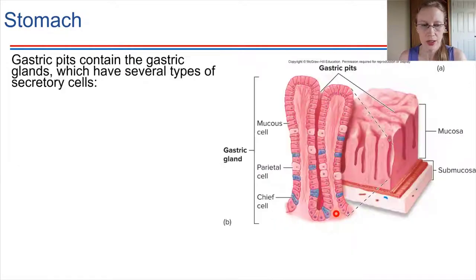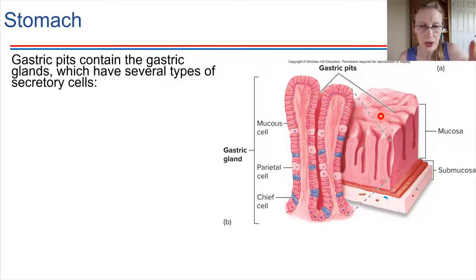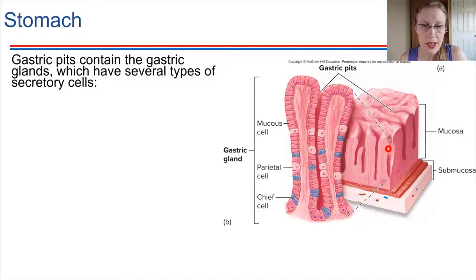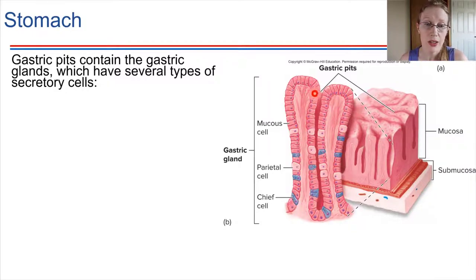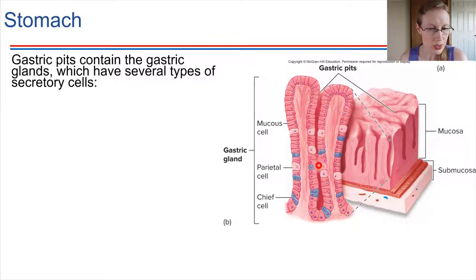Looking at the gastric pits: this is the inside surface of the stomach, and we can see all the rugae. If we follow one of those folds down, there's a big pit, and we zoom in on one of those. The gastric pits house a whole bunch of epithelial cells lining the surface, and a few of these are very specialized to secrete specific substances.